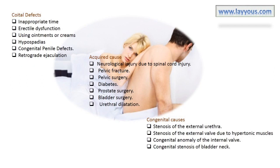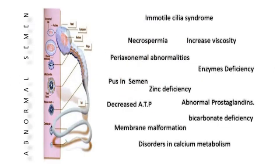Abnormal semen — disorders of the sperm and its ability for fertilization include: immotile cilia syndrome, necrospermia (dead sperm), periaxonemal abnormalities, increased viscosity of semen above normal levels. Factors that may suppress sperm include deficiency of certain enzymes important in sperm motility (protein-carboxylmethyl APCM), presence of pus in the semen, zinc deficiency, decreased adenosine triphosphate (ATP) available for sperm motility, sperm membrane malformation, disorders in calcium metabolism, and lack of substances needed for sperm motility such as bicarbonate or abnormal levels of prostaglandins.